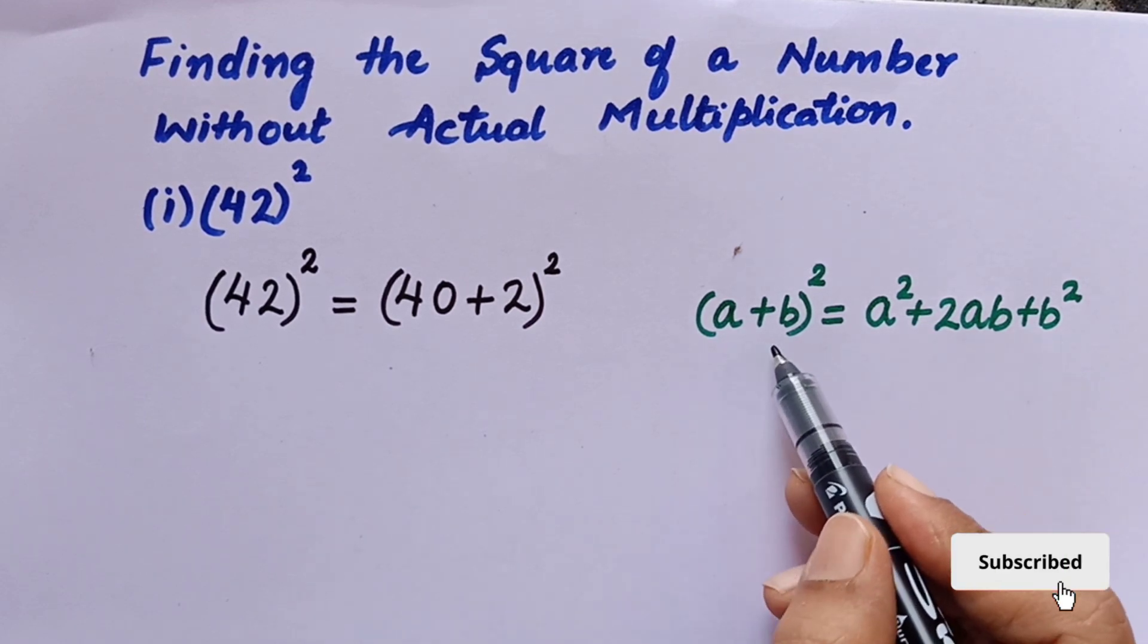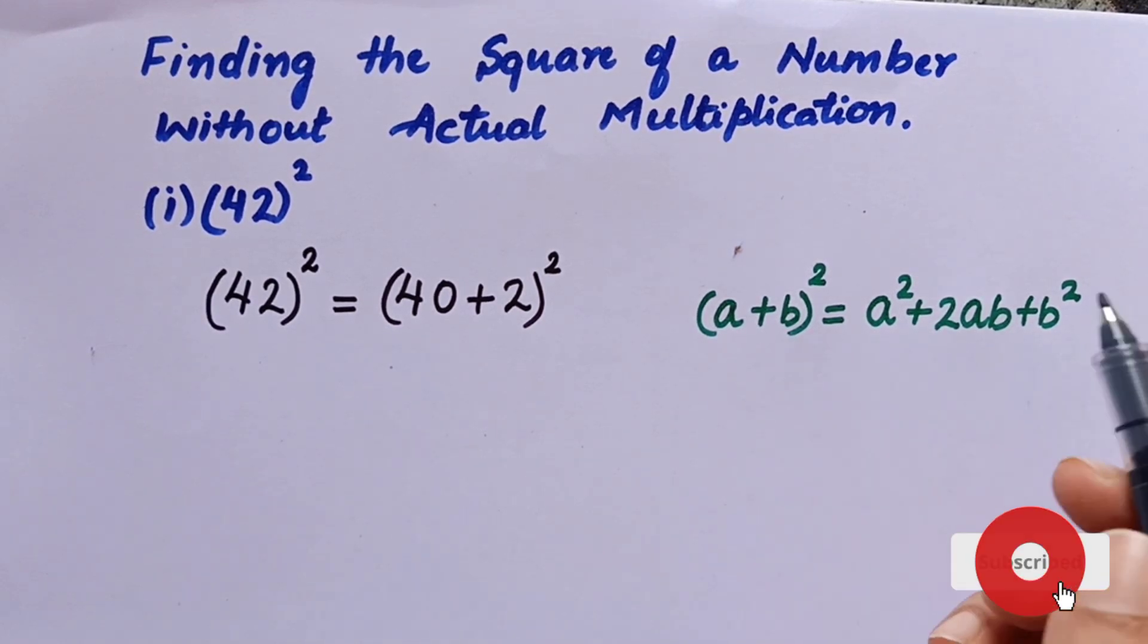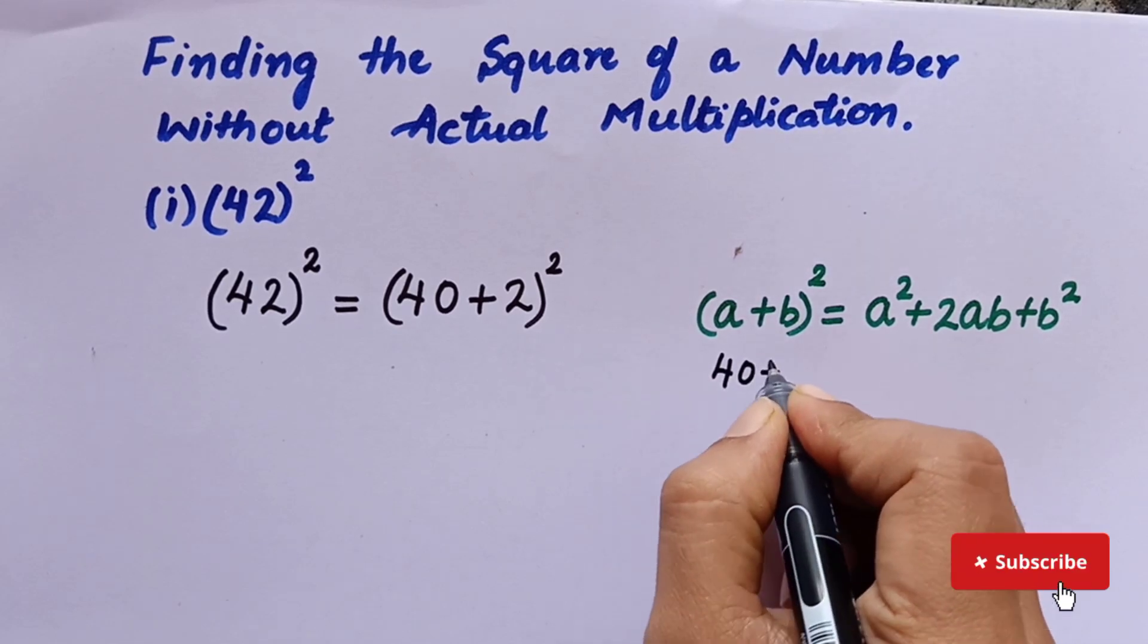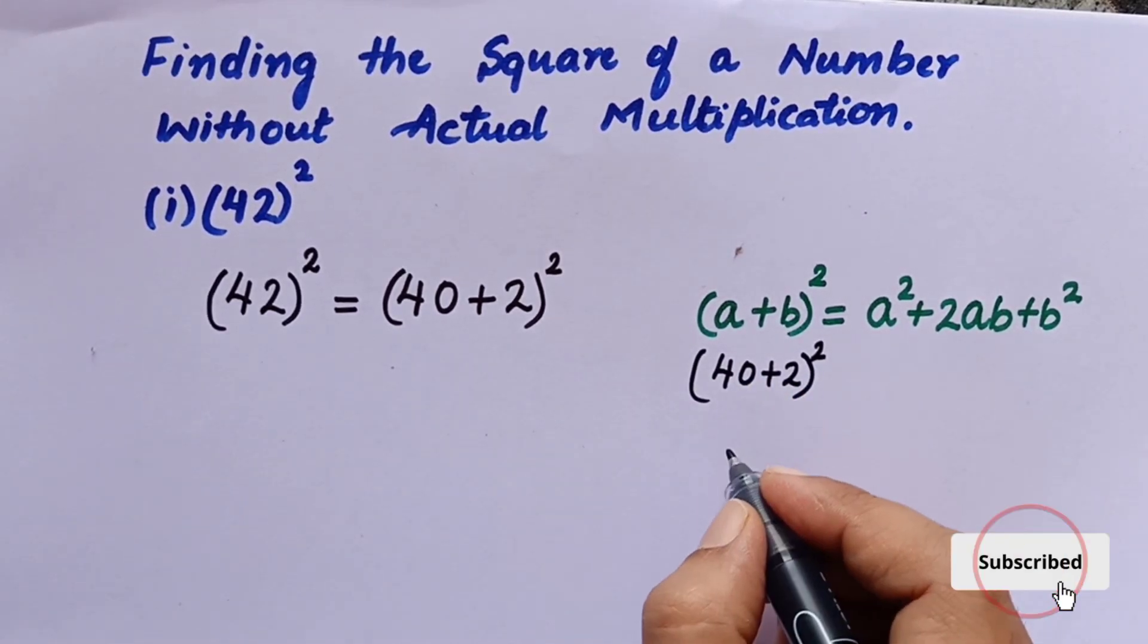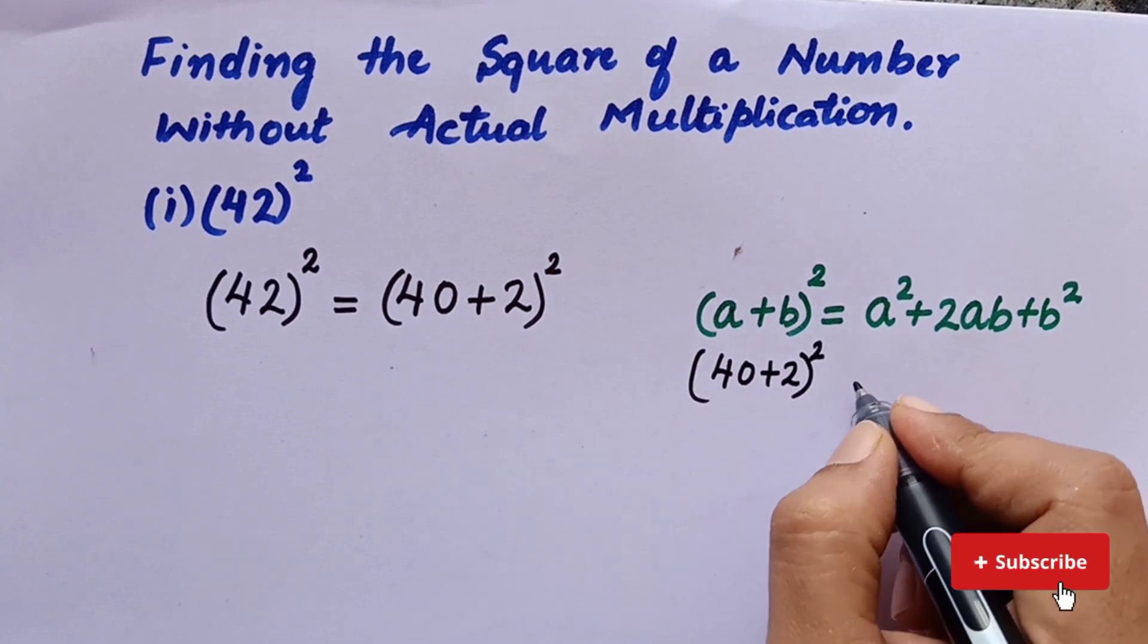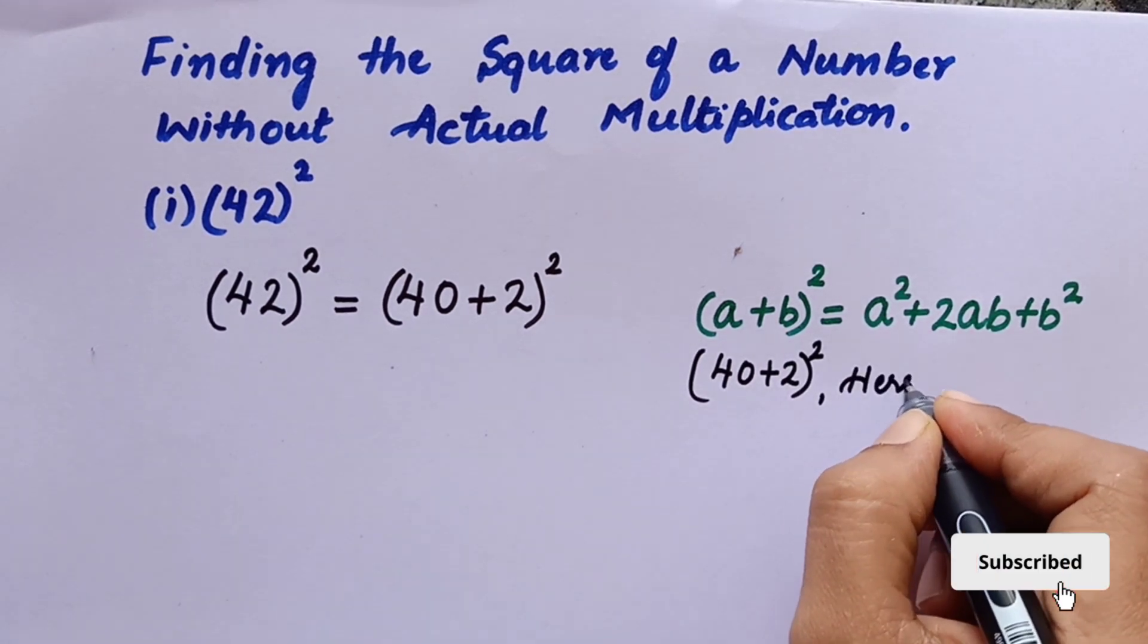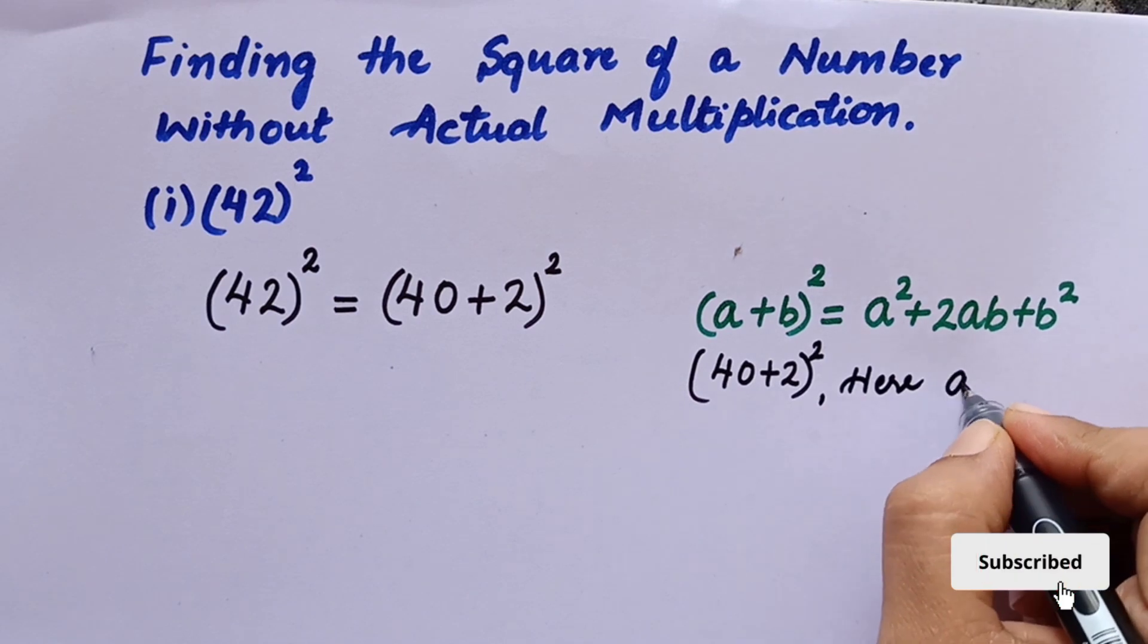See, the 40 plus 2 whole squared is in the form of (a + b) whole squared. The identity (a + b)² equals a² + 2ab + b². Now for 40 plus 2 whole squared, here a is equal to 40 and b equals 2.